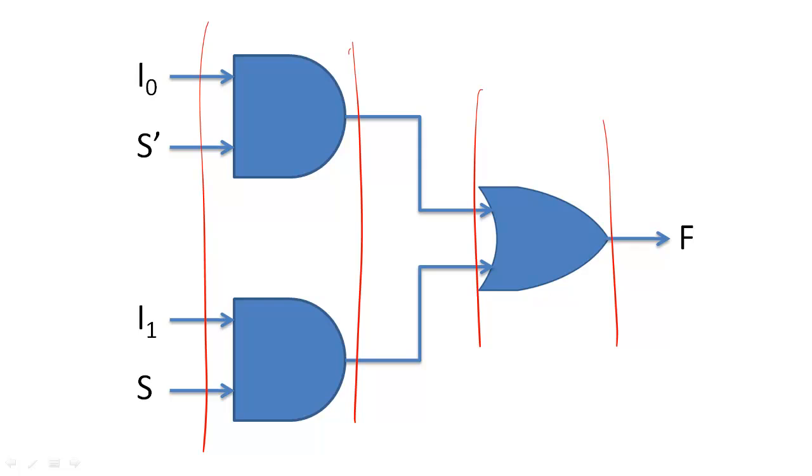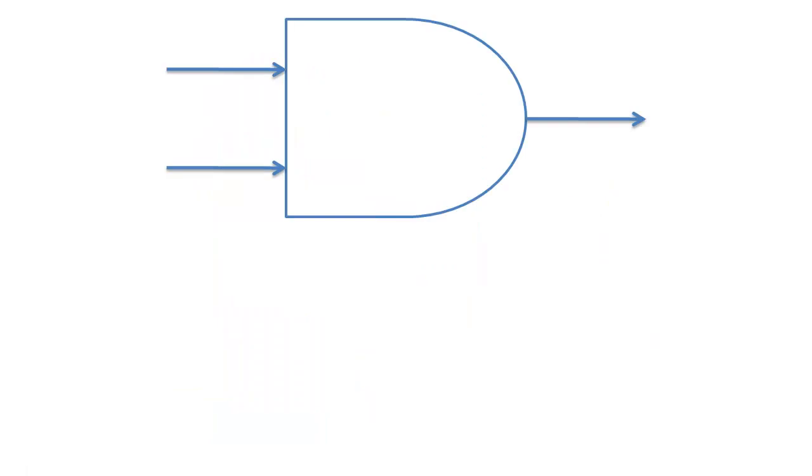While these circuits implemented minimal Boolean expressions, they are not strictly minimal circuits because of the way that we physically implement AND and NOR gates.